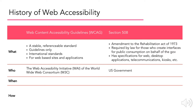Section 508 is actually an amendment to the Rehabilitation Act of 1973. This means that companies that have government contracts or that have government employees using their software have to comply with these standards by law. However, most private sector companies are not required by any law to create accessible code, and because of this lack of regulation, that's why empathy is crucial in a software company from the top down.